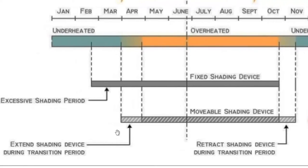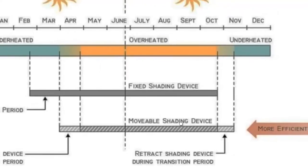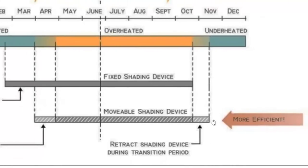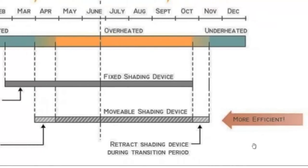By extending the movable shading device during the transition period from March or April, you can control the heat entering your house. You can then adjust it further into the overheated period, and even into the underheated period such as October — where a permanent device is not able to help but a movable device will definitely help in preventing unnecessary heat gain, which is considered more efficient.